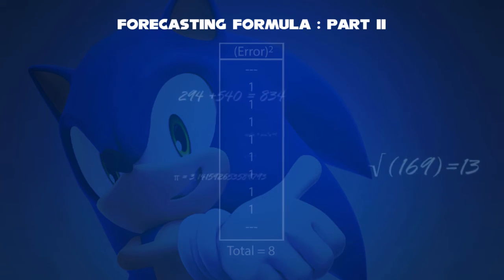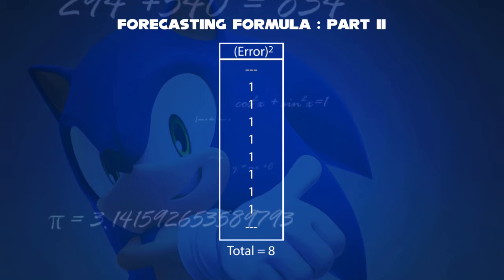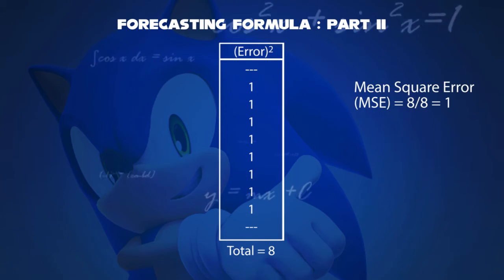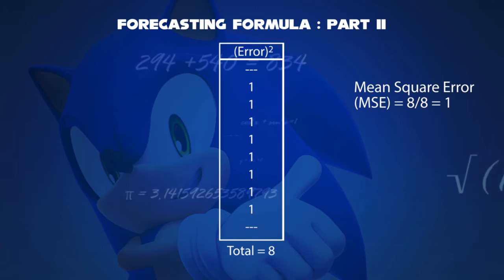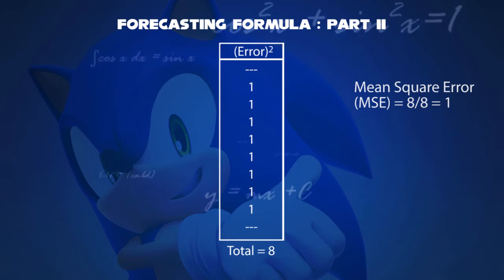On taking square of an error, same as the modulus ones, but multiply with itself. You have obtained eight. The mean square error is one, just like we did with mean absolute deviation.